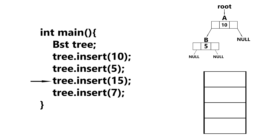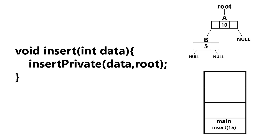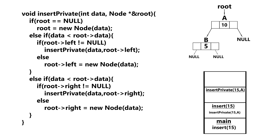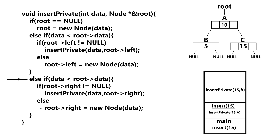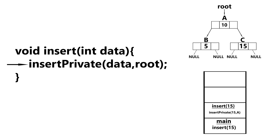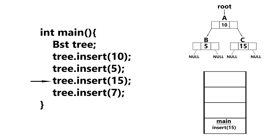Inserting 15 now — we push that onto the stack, enter insert, which invokes insert_private. Inside insert_private, is our root null? It's not. Is the data we're trying to insert less than the root data? No, it's not. So we move to the next else-if: is the data greater than the root node's data? Yes, it is. We test to see if the root node has a right child — it doesn't — so we can safely insert here. We finish executing insert_private, pop it off, return to insert, pop that off, and continue executing our main function.